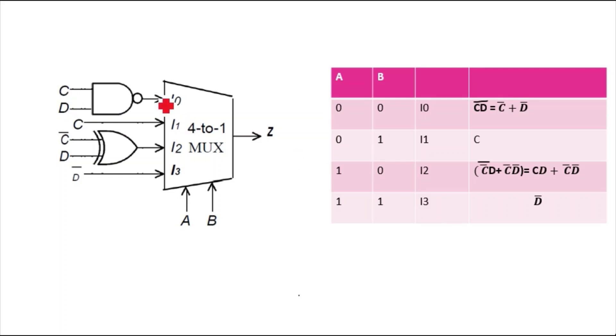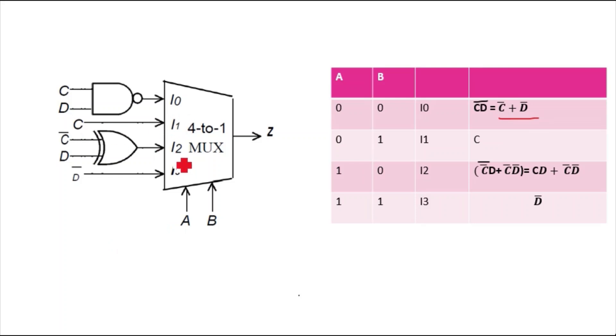For I0, a NAND gate is provided and the inputs of the NAND gate are C and D. So at I0 you will get CD-bar (i.e., CD whole bar). If we expand it using De Morgan's, it becomes C-bar plus D-bar. So this is your I0. Now I1 is C, and I2 is C-bar·D.